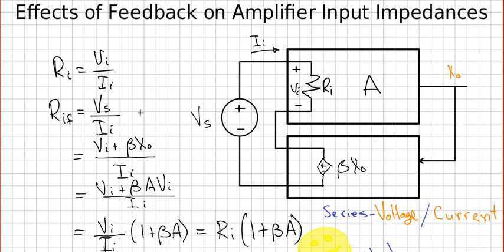So, rewriting VS using Kirchhoff's voltage law around this loop right here, you notice that VS is equal to Vi plus beta X out. And X out is equal to A times Vi. So we plug that in right here. Now we can factor out the Vi on the top and the Ii on the bottom, ending up with this expression down here.